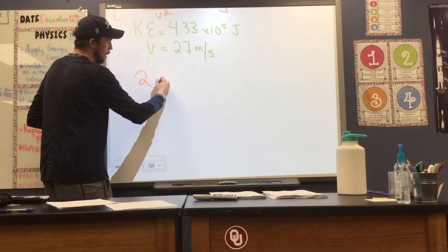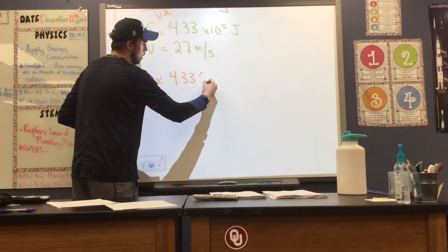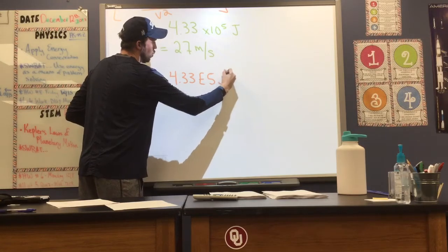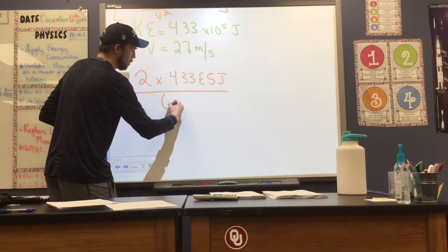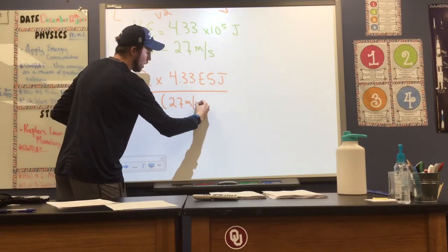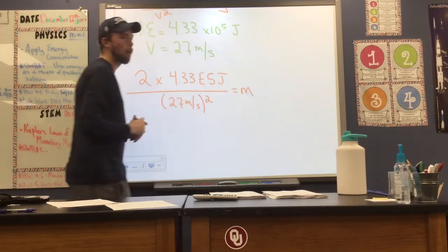So 2 times our kinetic energy, which was 4.33 e to the 5th joules, divided by our velocity squared, 27 meters per second. Don't forget that value needs to be squared. It is equal to our mass.